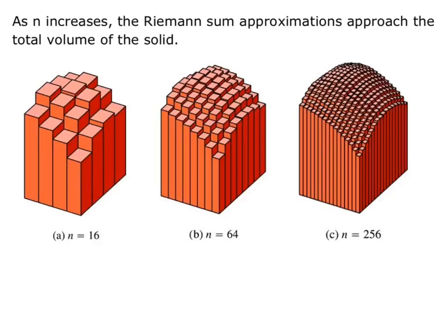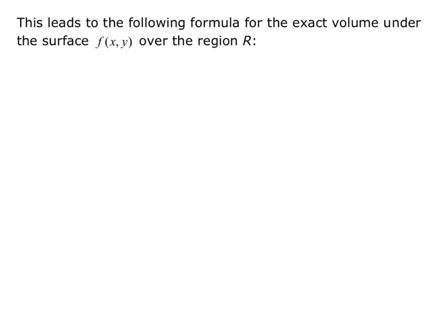We're interested in letting n go to infinity. This leads to the following formula for the exact volume under the surface f(x,y) over the region R. The volume is equal to the limit as n goes to infinity of the sum from k equals 1 to n of f(x_k, y_k) times Δa_k. So height times the area of the base.